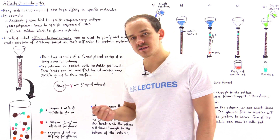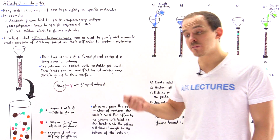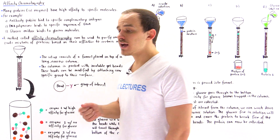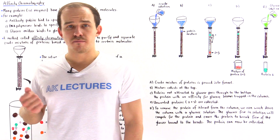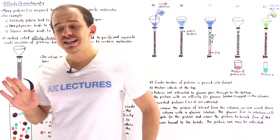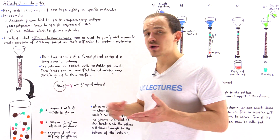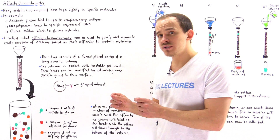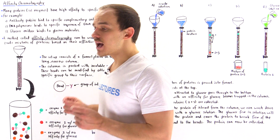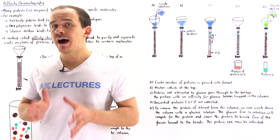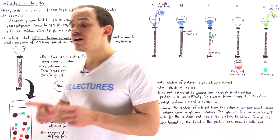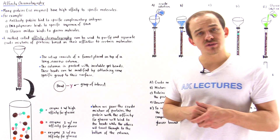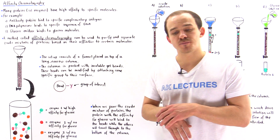Then we discussed dialysis, in which we separate proteins from tiny molecules and ions by using a semi-permeable membrane. Next, we moved on to gel filtration chromatography, in which we separate the protein mixture based on their size. And finally, we discussed ion exchange chromatography, in which we separate the proteins based on their net charge.